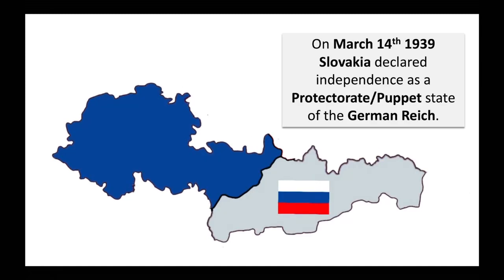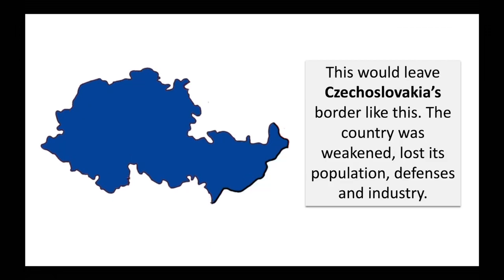On March 14, 1939, Slovakia declared independence backed by Germany, and it was a protectorate — a puppet state of Germany. This would leave Czechoslovakia's borders like this.